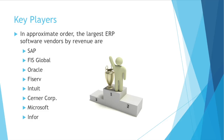This is a list in approximate order currently based on revenue: SAP, FIS Global, Oracle, Fiserv, Intuit, Cerner Corporation, Microsoft, and Infor. All these companies offer different modules to help businesses organize their operations, accounting, HR, sales, and many more. These are all very large companies with thousands if not millions of customers.